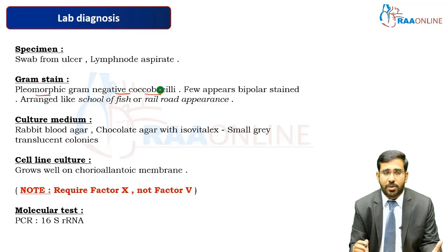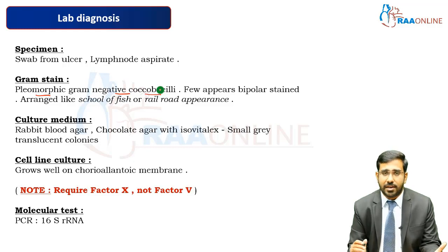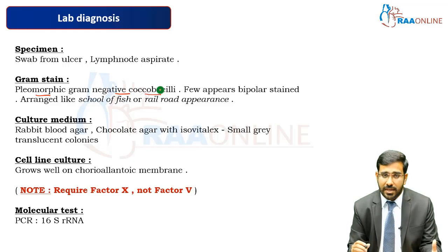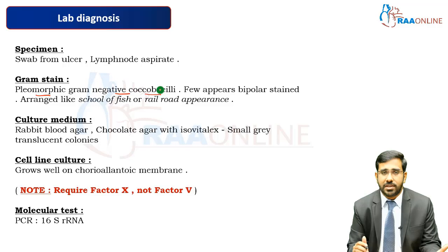At the end of the session, a slide showing the school of fish or railroad appearance will be shown. The culture media used for Haemophilus ducreyi is rabbit blood agar, and we can also use selective agar like chocolate agar with isovitalex. Colonies grow at around 48 to 72 hours, appearing as small gray translucent colonies. The organism can also be grown on cell lines or on chorioallantoic membrane. To differentiate Haemophilus species, Factor X and Factor V discs are used — Haemophilus ducreyi grows around Factor X but not Factor V, which is a characteristic differentiating feature.